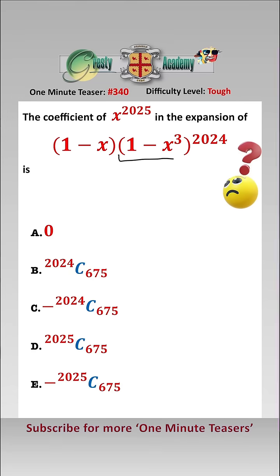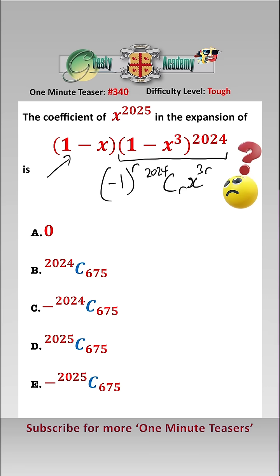The general term of this expression is (-1)^r · ²⁰²⁴Cᵣ · x^(3r). When we multiply that by (1 - x), we get two general terms: (-1)^r · ²⁰²⁴Cᵣ · x^(3r), from multiplying by the 1.